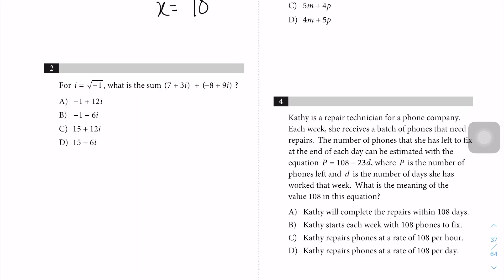Question 2 uses the imaginary unit i, which is put in there to throw you off, but really this is just a simple addition problem. It is 7 plus negative 8, which is minus 8, equal to minus 1. And 3i plus 9i is equal to 12i. So the answer is minus 1 plus 12i, which is A.